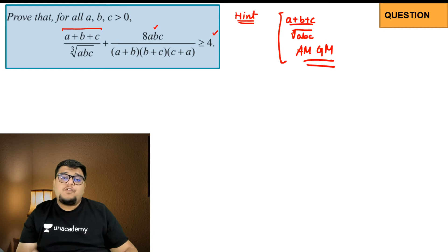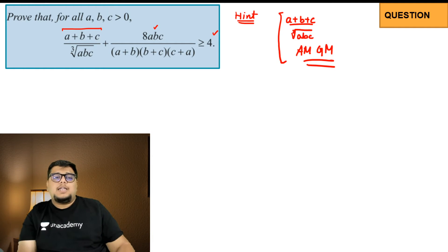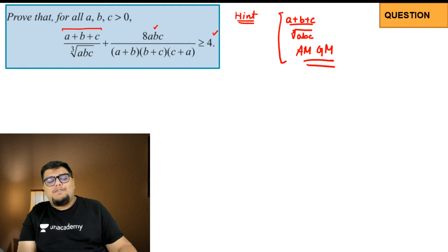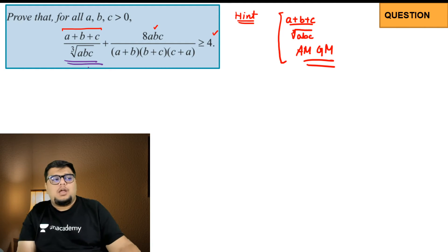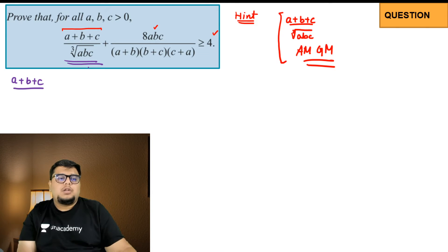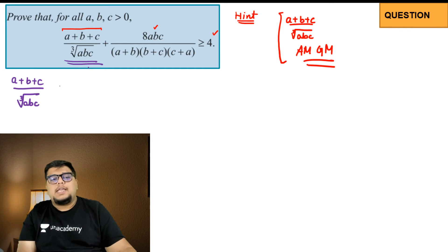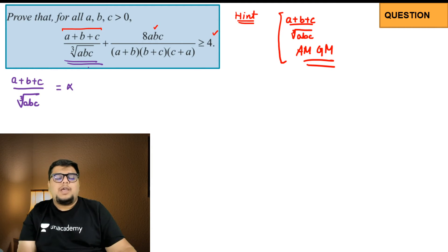I hope some of you were able to solve this question. Let's see what the solution is. We will start off by isolating the part (a+b+c) divided by the cube root of abc. Let's say it is equal to some number alpha. So what I will do here is try to cube it.